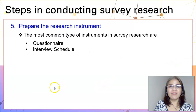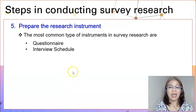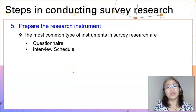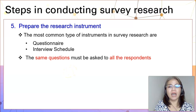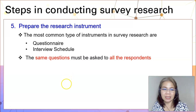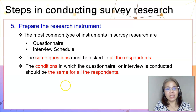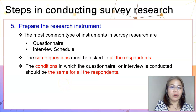After you have identified the method of data collection, the next thing is to prepare the research instrument. In survey research, the two most common types of research instruments used are questionnaire and interview schedule. When you conduct the survey or the interview, it is very important that you ask the same questions to all your respondents, and that the conditions in which the questionnaire or interview is conducted should be the same for all respondents.